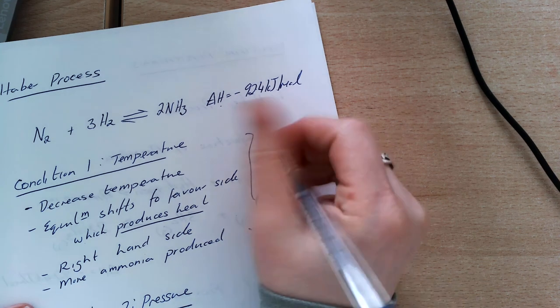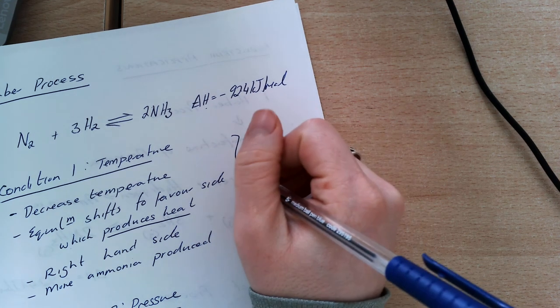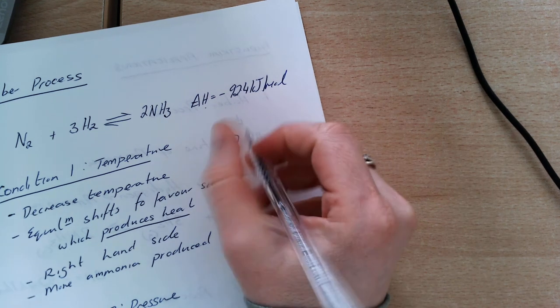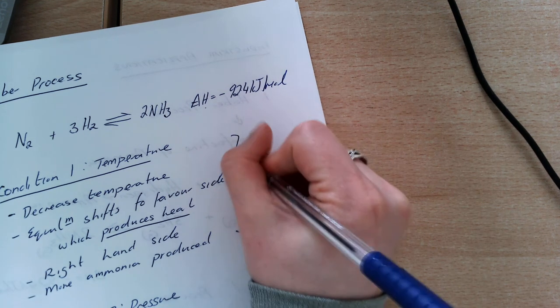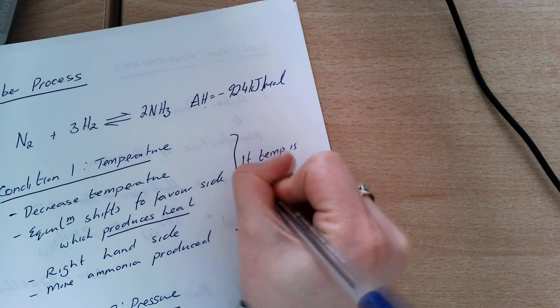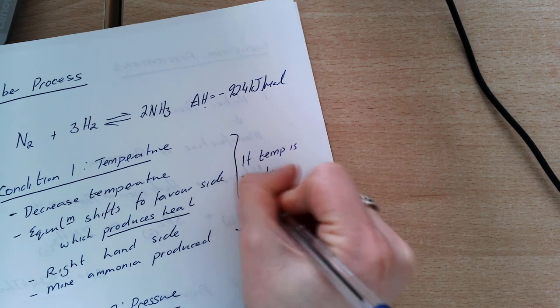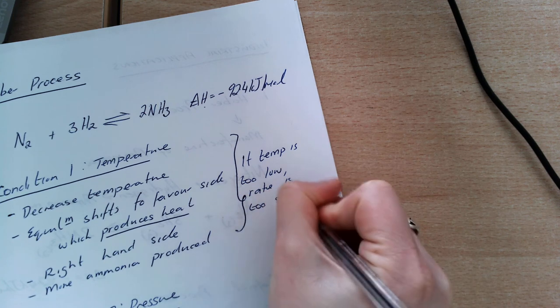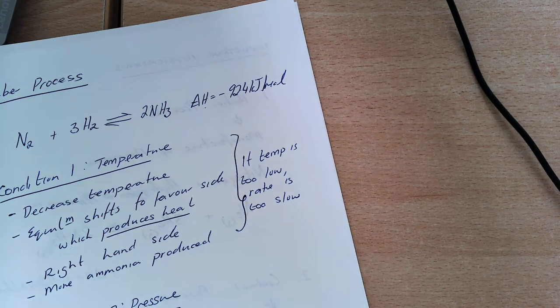If my temperature is too low, I can't have it really low because my rate of reaction will be too slow. If the temperature is too low, the rate is too slow, so I cannot have an extremely low temperature.